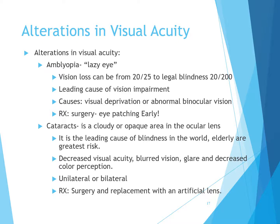Alterations in visual acuity include amblyopia — the lazy eye — with vision loss ranging from 20/25 to legal blindness of 20/200. It is the leading cause of visual impairment and may cause visual deprivation and abnormal binocular vision; early surgical intervention is needed. Cataracts are a cloudy or opaque area in the ocular lens and the leading cause of blindness in the world. The elderly are at greatest risk. Symptoms include decreased visual acuity, blurred vision, glare, and decreased color perception.